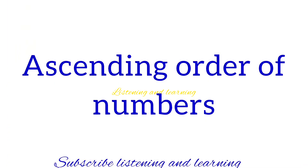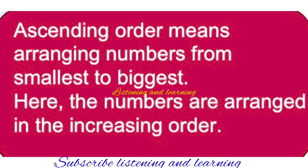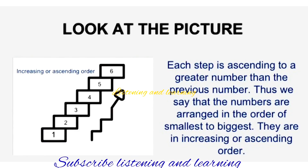Now we go to ascending order of numbers in detail. Ascending order means arranging numbers from smallest to biggest — in increasing order. Look at this picture. It is an example of ascending order. When we go upstairs, the steps are in increasing order. When we go to the first step, then second step, then third step — each step is ascending to a greater number than the previous. Thus the numbers are arranged in order from smallest to biggest, in increasing or ascending order.